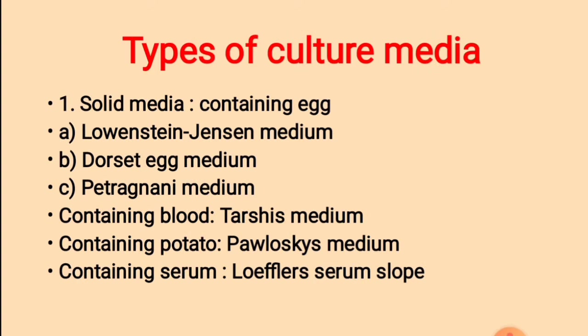What are the types of culture media used for cultivation of Mycobacterium tuberculosis? Solid media containing egg: (1) Lowenstein-Jensen medium — one of the most important media used in identification; (2) Dorset egg medium; (3) Petragnani medium. Then Tarshis medium containing blood, Pawlowski medium containing potato, and Löffler serum slope containing serum.